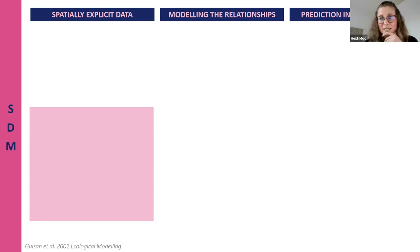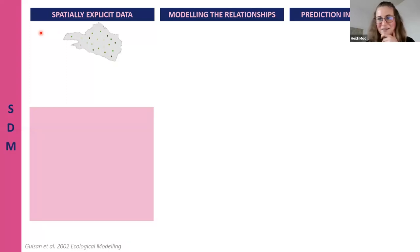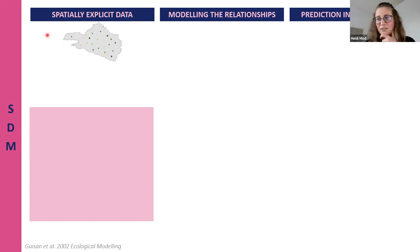To build an SDM, we first need data. Since this is a spatial model, it needs to be spatially explicit data. Here is a map - those who have worked in the Reschalp study area or heard presentations from Antoine's group might recognize it. It looks a bit unusual because it's a 3D representation. Green dots represent the places where we collected information on the ecological phenomenon of interest - in the case of SDM, it's usually presences and absences of a species.